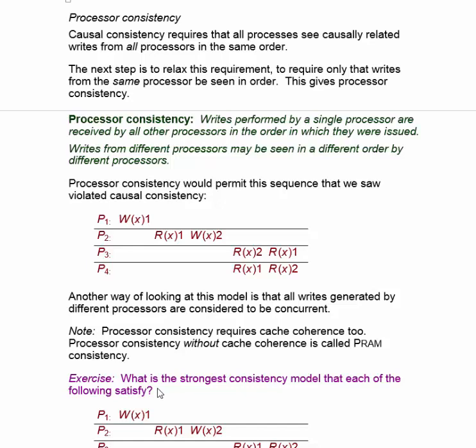The next step in relaxing consistency requirements is processor consistency. In causal consistency, we need to see all writes by all processors that are causally related in the same order. But if we only require that writes from a particular processor be seen in the same order, that gives processor consistency.